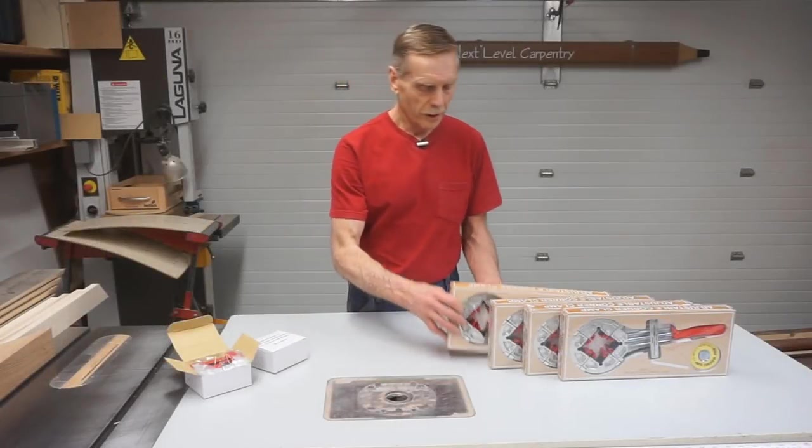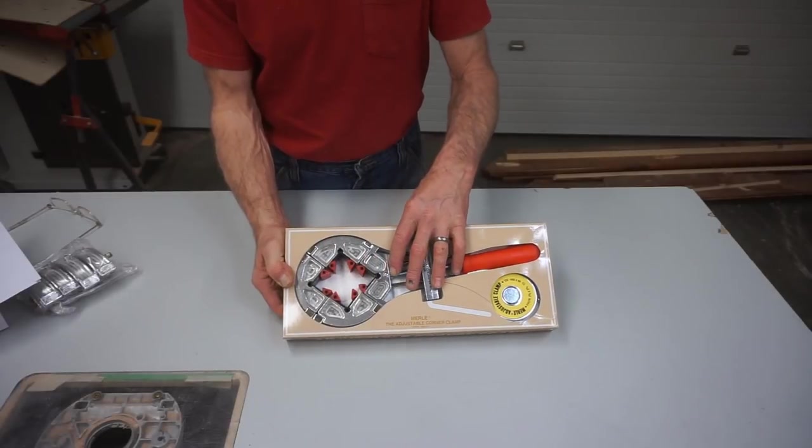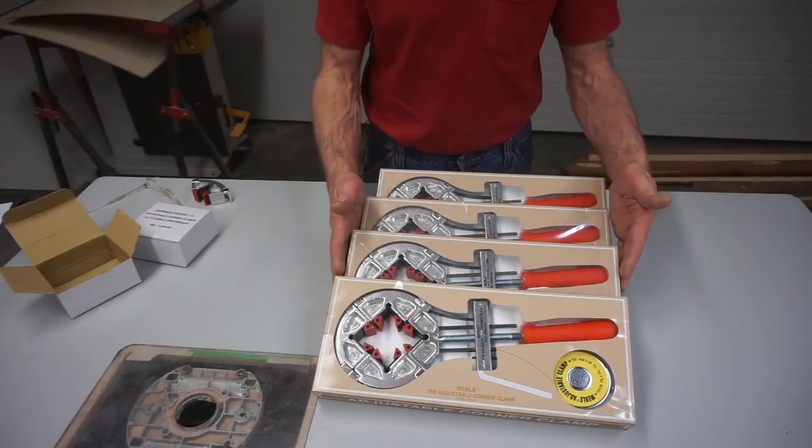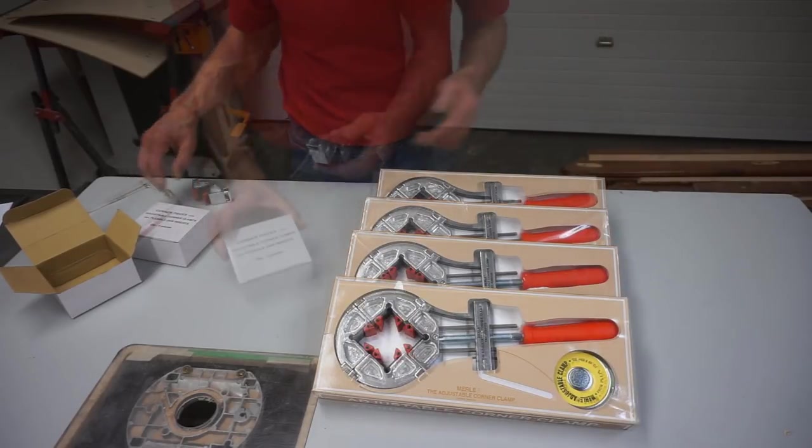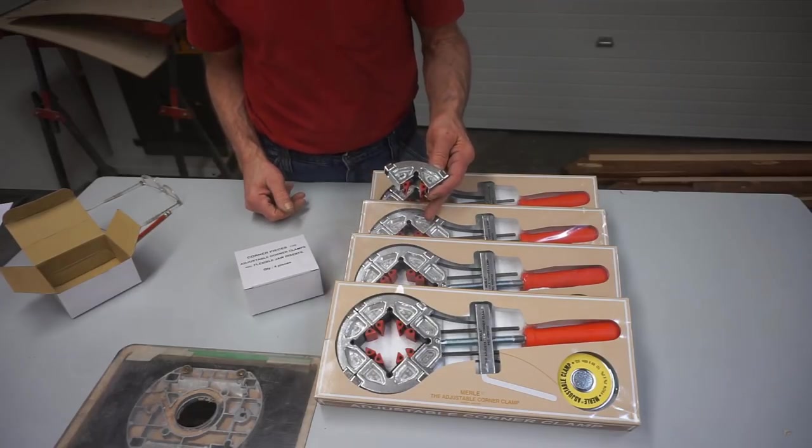The Merrill adjustable corner clamps, or band clamps, come in this simple box. They're set up with four jaws for clamping four-sided things. The Shopmaster set that I have here comes with four of the clamps, plus eight extra corner pieces when project size, corner count, or production run is larger.